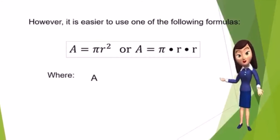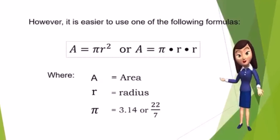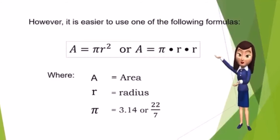The formula is: area equals pi r squared, or area equals pi times r times r. Where A is the area, r is the radius, and pi is equal to 3 and 14 hundredths, or 22 over 7.